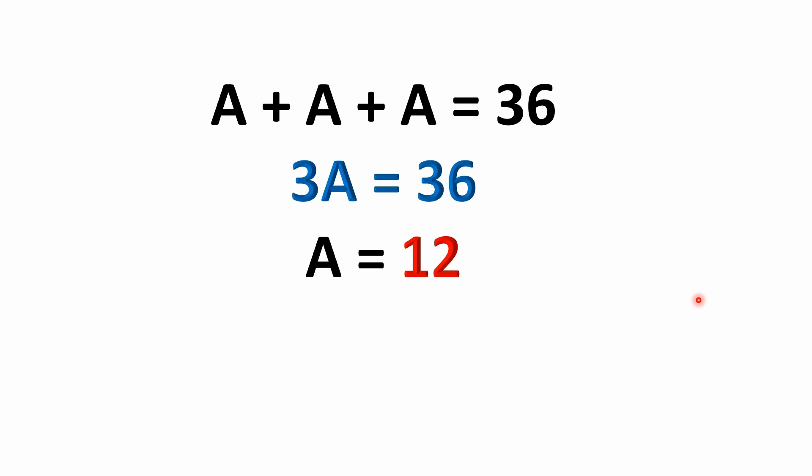Well, it's a little bit easier to look at that as 3A equals 36 when you add up the A's. And then you can pretty quickly see that if you divide both sides of the equation by 3, you're going to be left with A on the left and 12 on the right because 36 divided by 3 would equal 12. So right off the bat, we know that A equals 12.